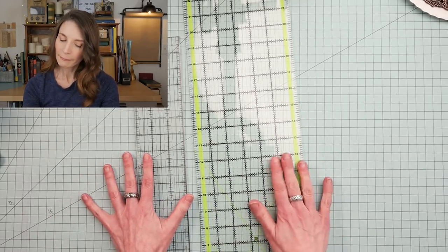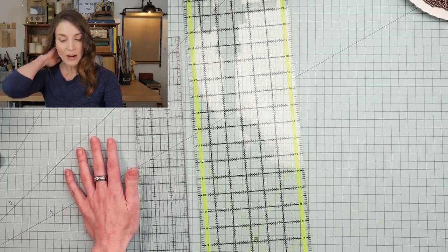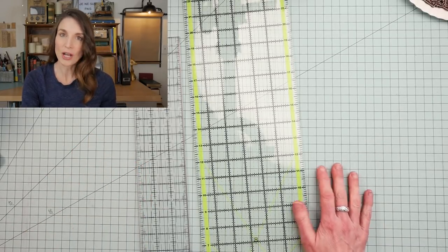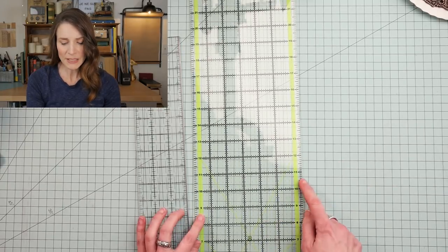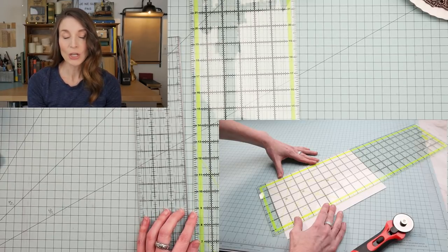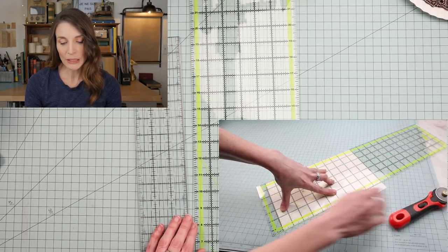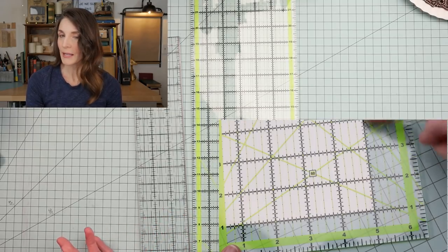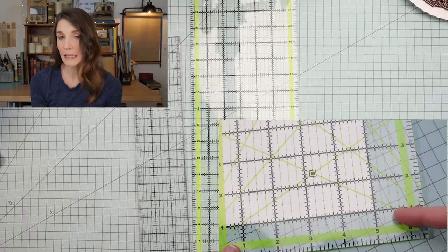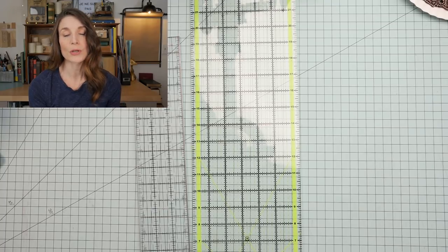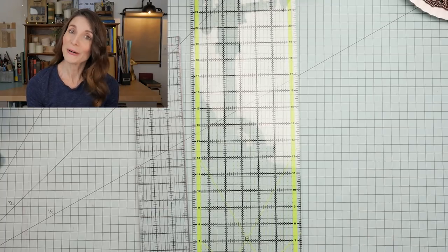But if you can only have one, get the big one. They are also not expensive. They are not a huge investment. But because they're clear and they have grid lines both horizontally and vertically, it really will up your game as far as accuracy is concerned and getting things trimmed properly and to the right size with good 90 degree corners. And that's helpful when you're making a book.